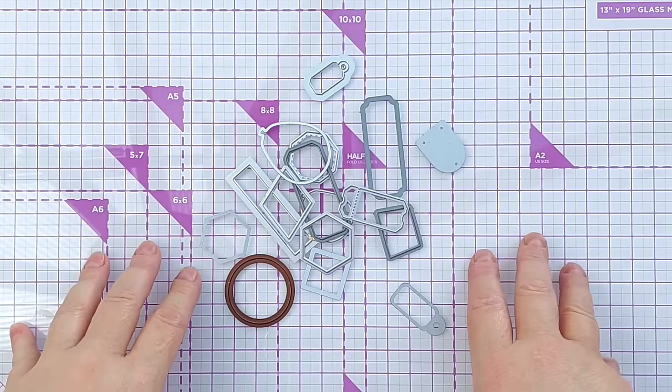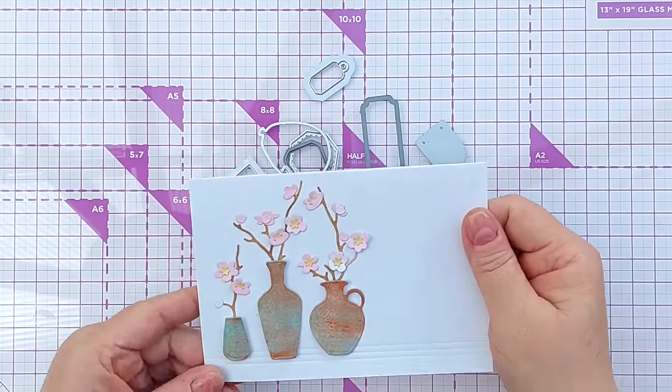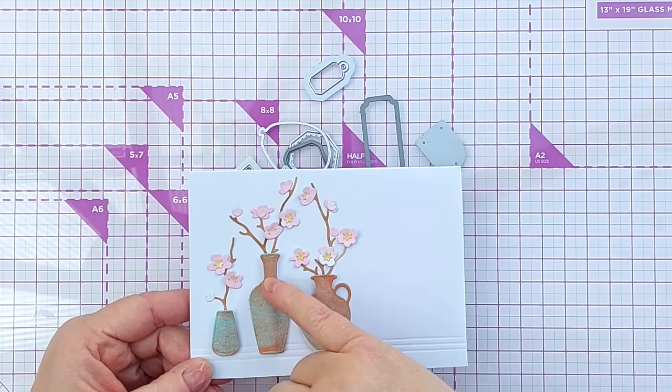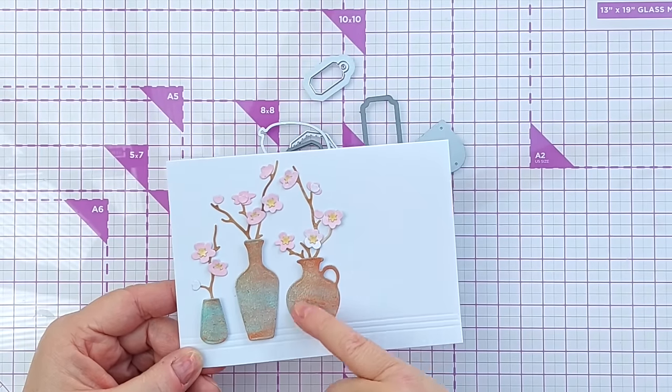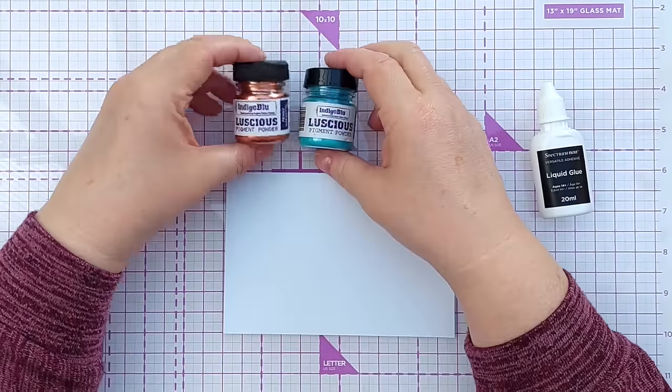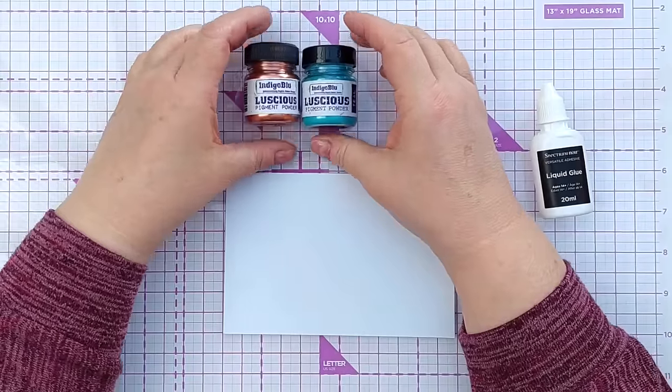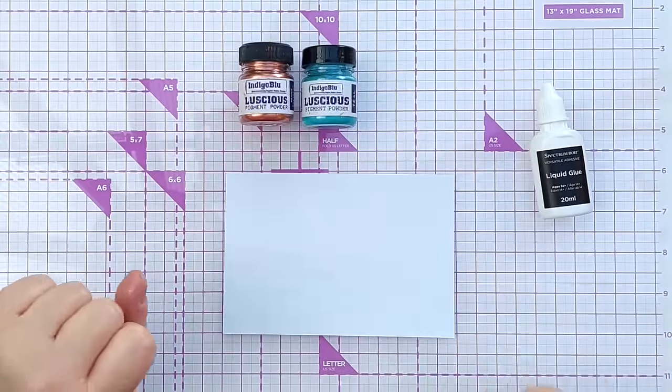But before we do any die-cutting I want to create the card that I'm going to die-cut from and I'm going to use luscious powders to create this lovely shimmery effect. To create my shimmery card I'm going to use luscious pigment powder in Penny Dreadful and Teal and this is going to give me a kind of verdigris look.